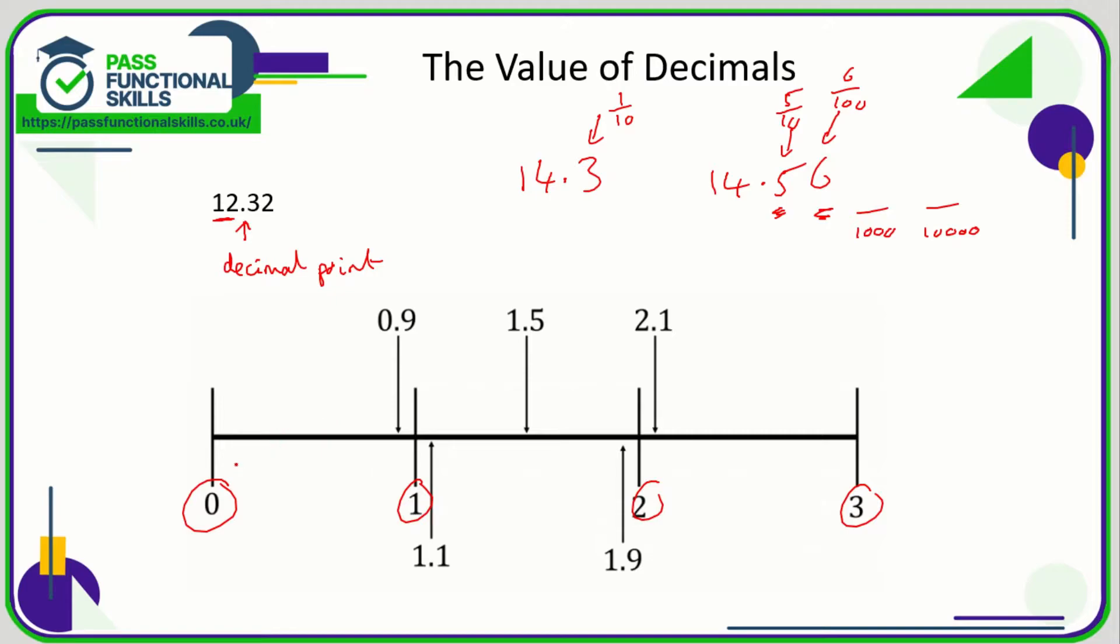So in tenths, we're going to go between 0 and 1 with 0.1, 0.2, 0.3, 0.4, 0.5, 0.6, 0.7, 0.8, and 0.9. So you can see that 0.9 is quite close to 1. Here's 1, so going up in tenths we have 1.1, which is very close to 1, then 1.2, 1.3, 1.4, 1.5. Now 1.5 is exactly halfway between 1 and 2.